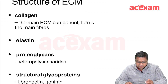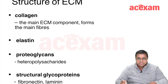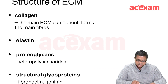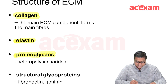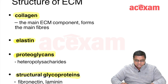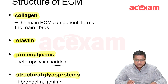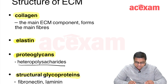The extracellular matrix contains several important molecules: collagen, elastin, proteoglycans, and structural glycoproteins. Proteoglycans are basically heteropolysaccharides, which we will discuss separately. The structural glycoproteins include fibronectin and laminin.